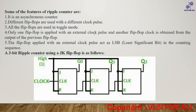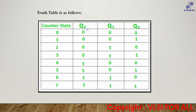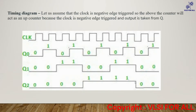Only one flip-flop is applied with an external clock pulse; the other flip-flops get their clock from the output of the previous flip-flop. The flip-flop applied with the external clock pulse acts as the LSB in the counting sequence. So Q0 is taken as LSB and the last Q is MSB. With three flip-flops, 2 power 3 gives 8 total states, counting from 0 to 7, that is from 000 to 111.